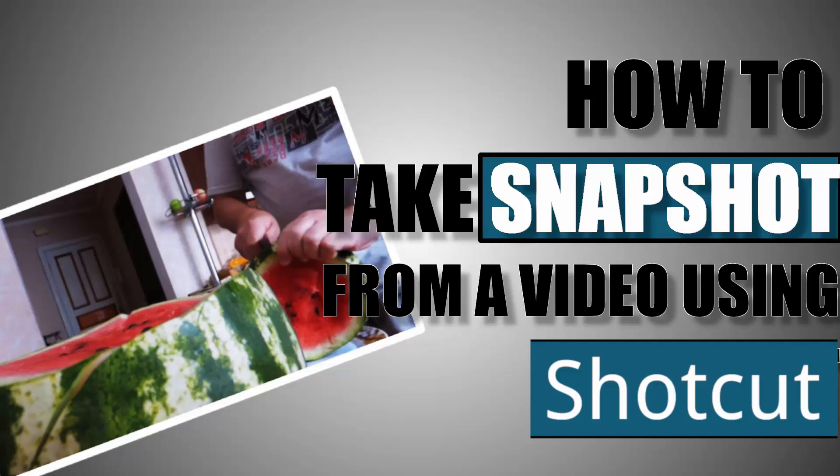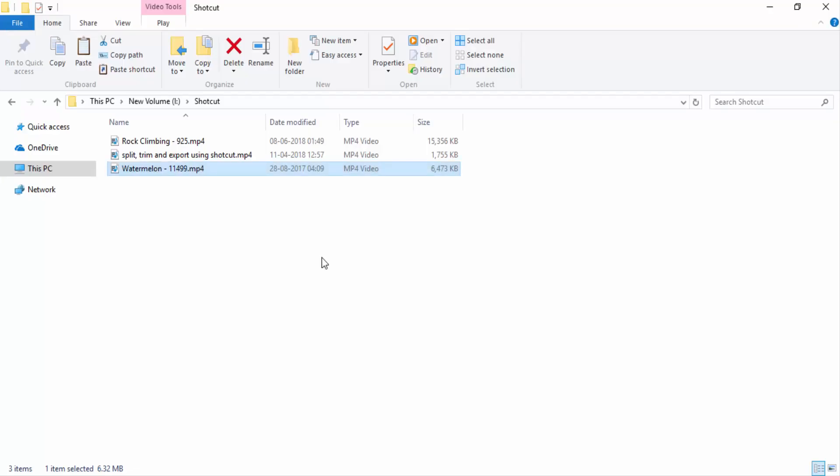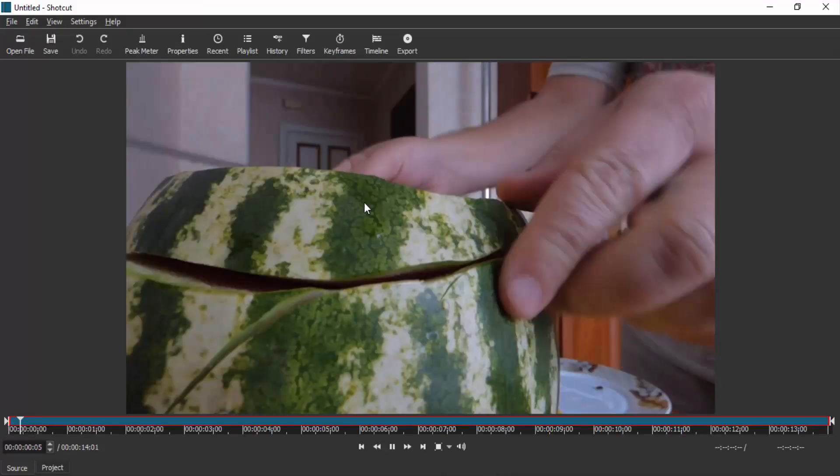Hi guys, this is Daniel from FND. In this video I'm going to show you how to take a screenshot from a video using Shotcut. So let's get started. First, open Shotcut and drag and drop your video inside the Shotcut.